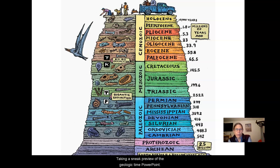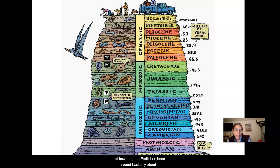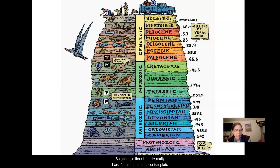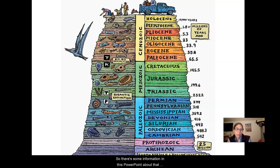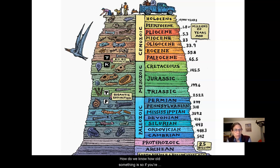This PowerPoint will give you the opportunity to look at how long the Earth has been around — basically about four and a half billion years. A lot has gone on in those four and a half billion years, and geologic time is really hard for us humans to contemplate the enormity of that kind of time span. There's also information here about dating of fossil finds and how we know how old something is.